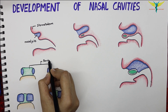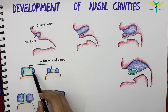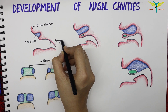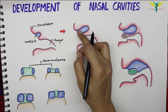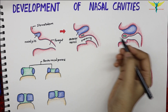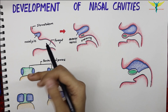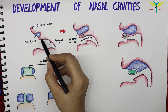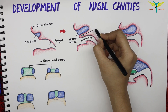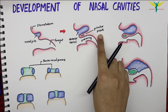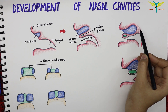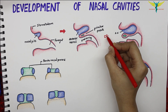Soon the medial and lateral processes fuse and form a partition between the pit and the stomatodeum. These are the anterior nares and this is the oral cavity. The medial and lateral nasal processes fuse together, forming a partition called the primitive palate. This primitive palate is derived from the frontonasal process.